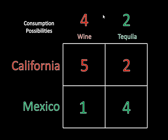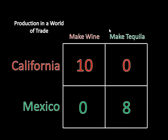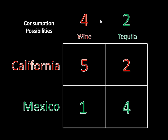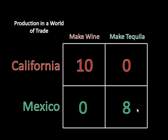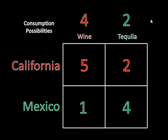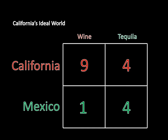The remainder after these bare minimum necessities that each state needs in order to be willing to trade is what we call a surplus — four bottles of wine and two bottles of tequila. So of the ten bottles California produced, one went to Mexico and four went to the surplus. Of Mexico's eight bottles of tequila, two were shipped to California and two remain in the surplus. California's ideal world would be to take the entire surplus for itself, enjoying two extra bottles of tequila and four extra bottles of wine, consuming nine bottles of wine and four bottles of tequila total, while Mexico is stuck with just what it would get on its own.